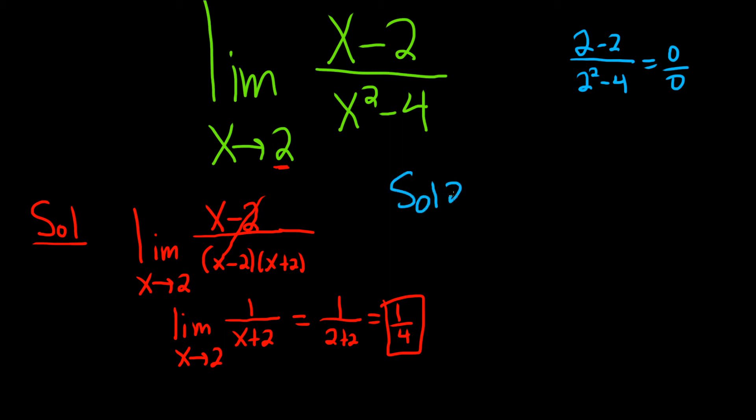Solution 2 actually relies on the fact that this limit has the form 0 over 0. This is called an indeterminate form. There's all kinds of indeterminate forms. But this one in particular is special.